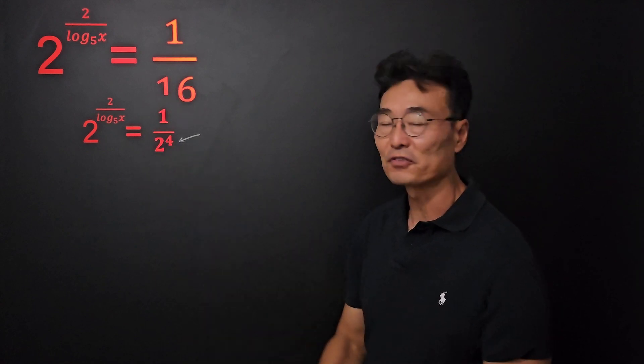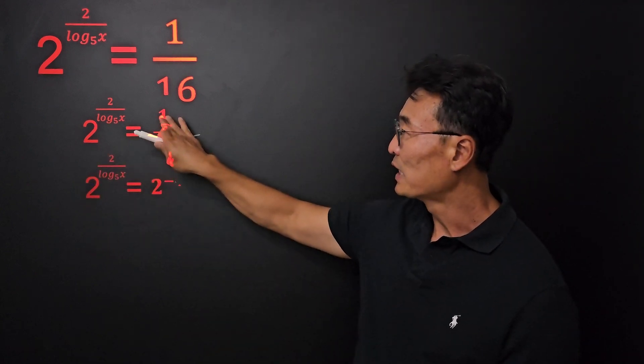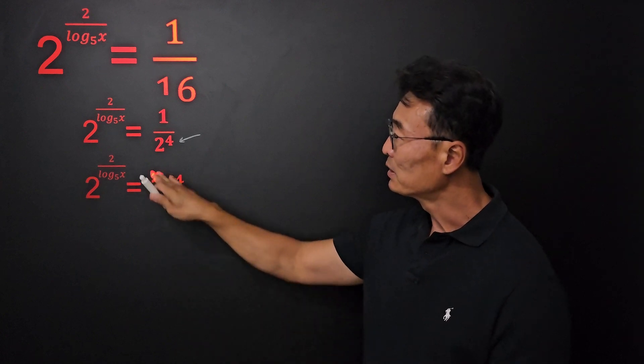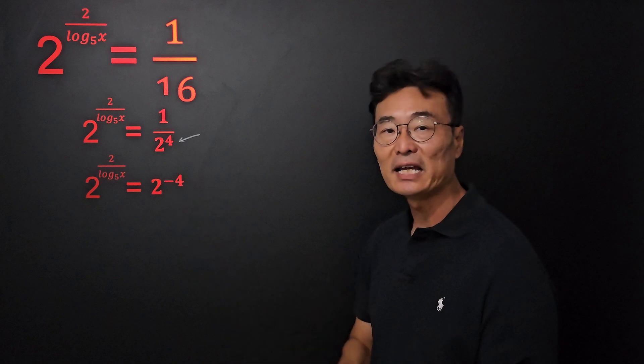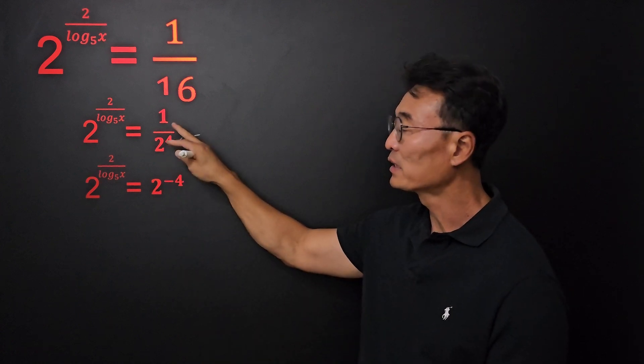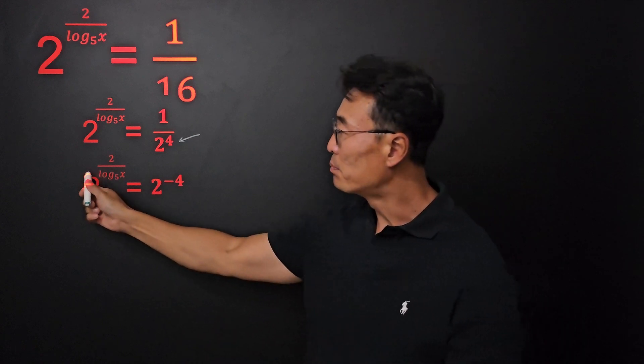Then we want the base to be 2, not 1 over 2 to the fourth power. So we are going to change that 1 over 2 to the fourth power into 2 to the negative fourth power, since when you take the reciprocal the exponent becomes negative.